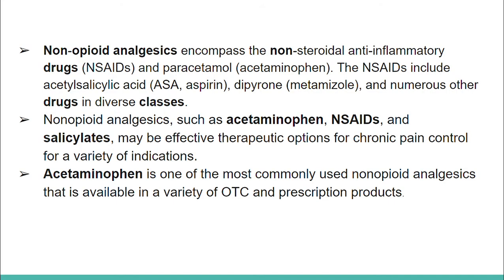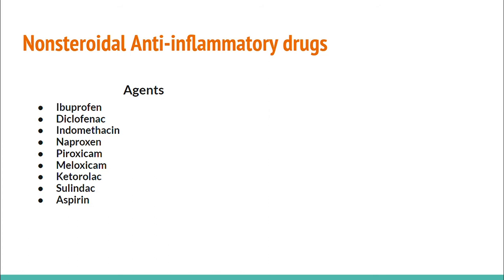Non-opioid analgesics encompass the non-steroidal anti-inflammatory drugs, or NSAIDs, and paracetamol, or acetaminophen. The NSAIDs include acetylsalicylic acid or aspirin, dipyrone or metamizole, and numerous other drugs in diverse classes. Non-opioid analgesics such as acetaminophen, NSAIDs, and salicylates may be effective therapeutic options for chronic pain control. Acetaminophen is one of the most commonly used non-opioid analgesics available in a variety of over-the-counter and prescription products. Now let's talk first about the non-steroidal anti-inflammatory drugs.